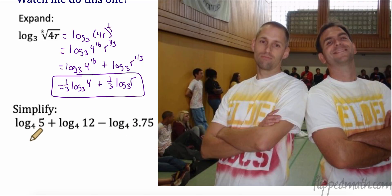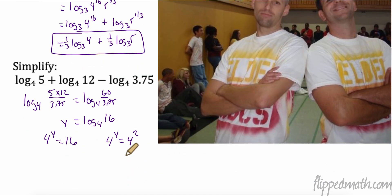Let's do this one. I notice I have the same logs. Here I have the product property - I'm adding. And then I'm going to subtract, divide. So I'm going to do log base 4 of 5 times 12 divided by 3.75. That's the same thing as log base 4 of 60 over 3.75, which is log base 4 of 16. Now we can evaluate that. So that's going to be 4 to the y equals 16. I need to rewrite this. So this is 4 to the y equals 4 to the 2nd. So now I know y equals 2.